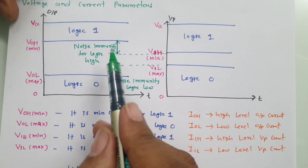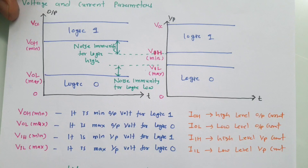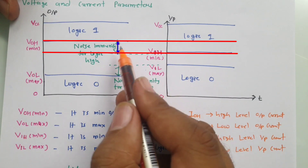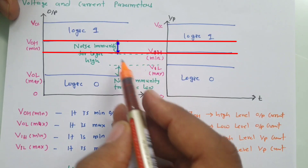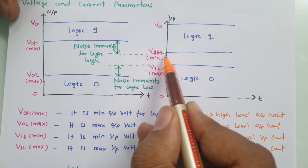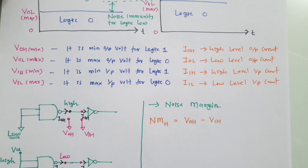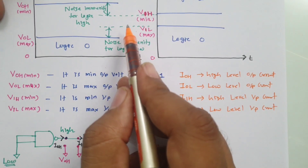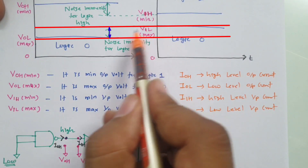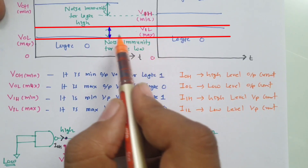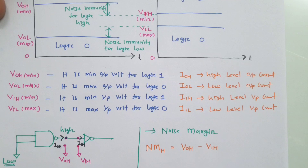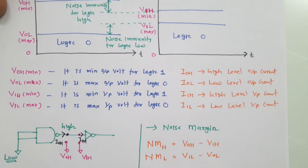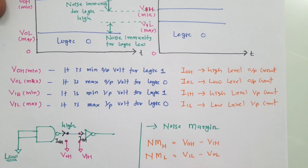In technical definition, the noise margin for logic high is VOH minus VIH, and the noise margin for logic low is VIL minus VOL. That is how noise immunity is understood in a digital IC.